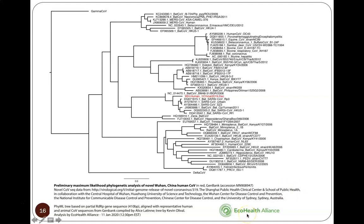EcoHealth Alliance, among One Health organizations alongside the One Health Initiative and One Health Commission, is probably the one with the most robust science looking at the wildlife, livestock, and environment interface with human life. They present this in a big paper available on their website. You can find it by searching 'phylogenetic analysis of novel Wuhan, China, human coronavirus.' When you look at it, you can see all the different coronaviruses and the group we're most interested in.